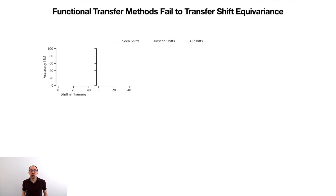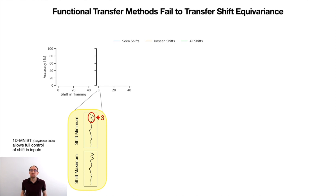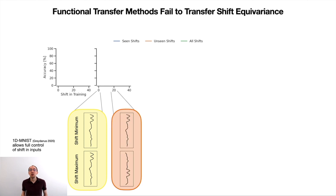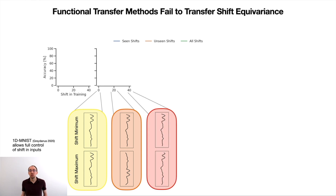We conduct a first experiment on 1D MNIST, where we classify 1D representations of digits and have full control over the shift in the data. The x-axis shows the maximum shift in the training data. At 0, the training data contains no shifts at all, so the 1D representation of the number 3 always starts at position 0. At 20, the data contains shifts up to the halfway point. At 40, all shifts are seen in training.